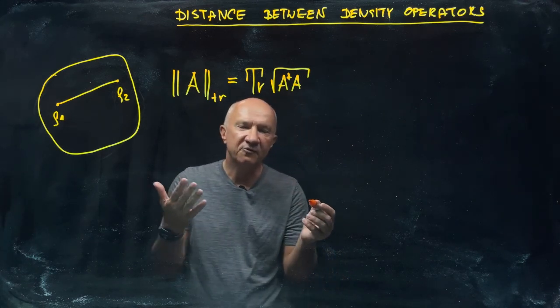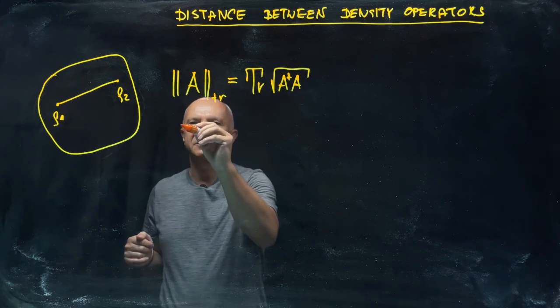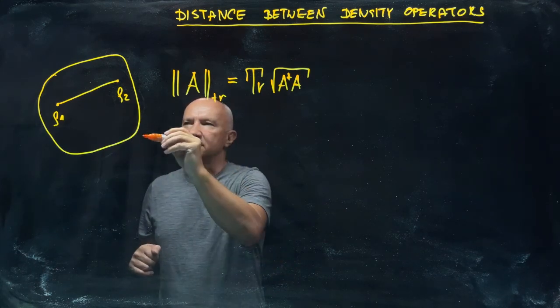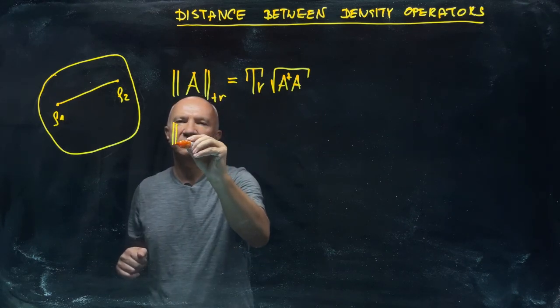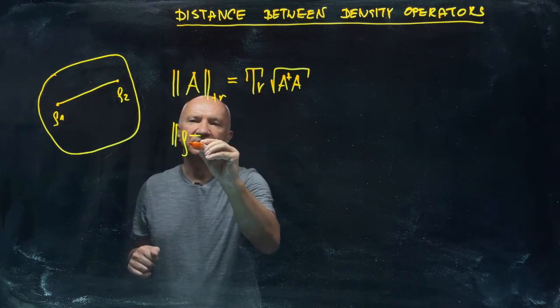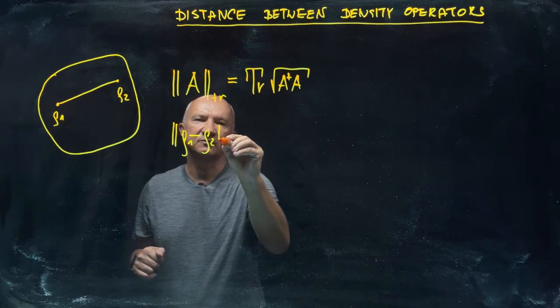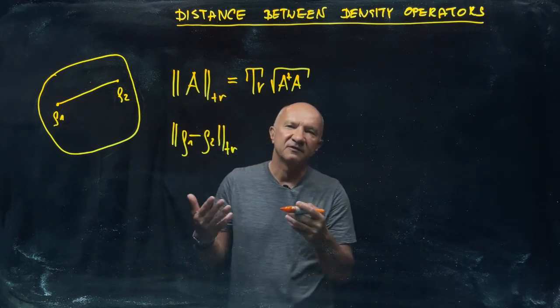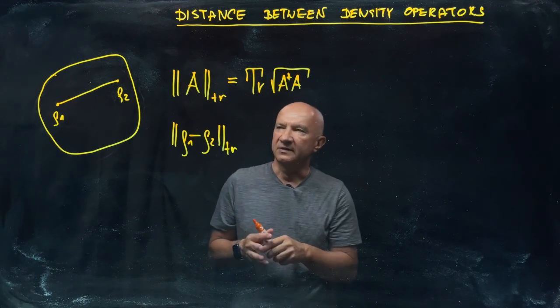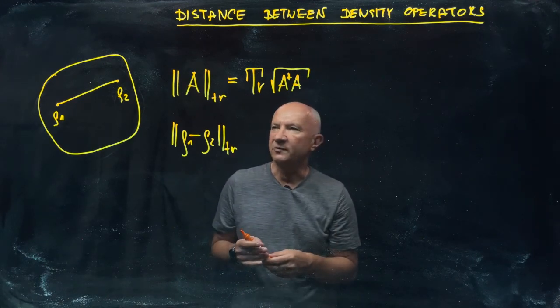Given a norm, you can always define the distance. For the two density operators ρ₁ and ρ₂, you simply take the difference between those two density operators and take the trace norm. That's a valid distance, a valid metric on the set of density operators.